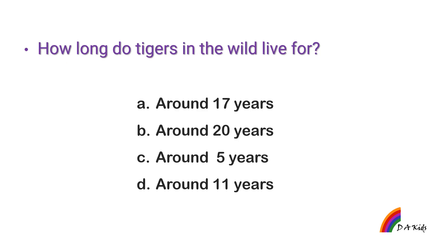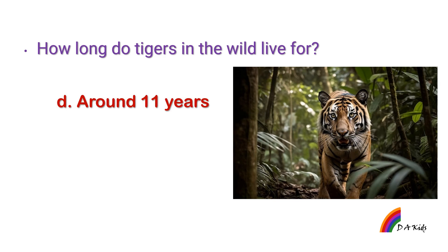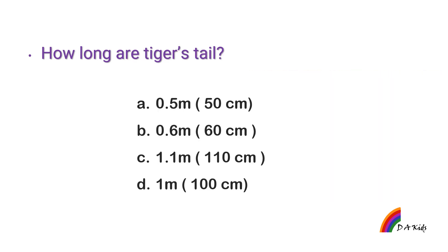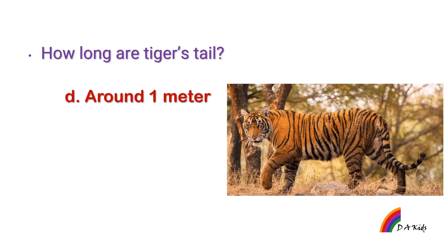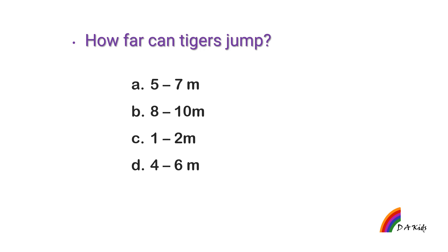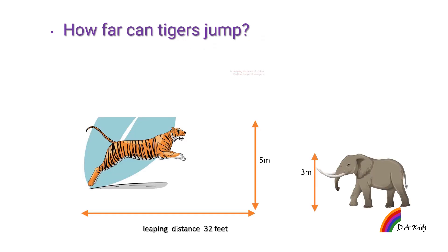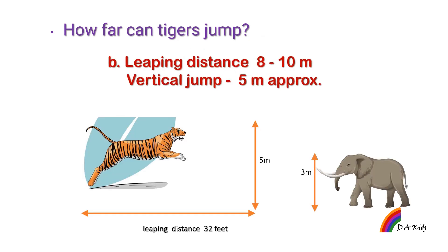How long do tigers in the wild live for? Around 11 years. How long is a tiger's tail? Around 1 meter. How far can tigers jump? Leaping distance: 8 to 10 meters. Vertical jump: approximately 5 meters.